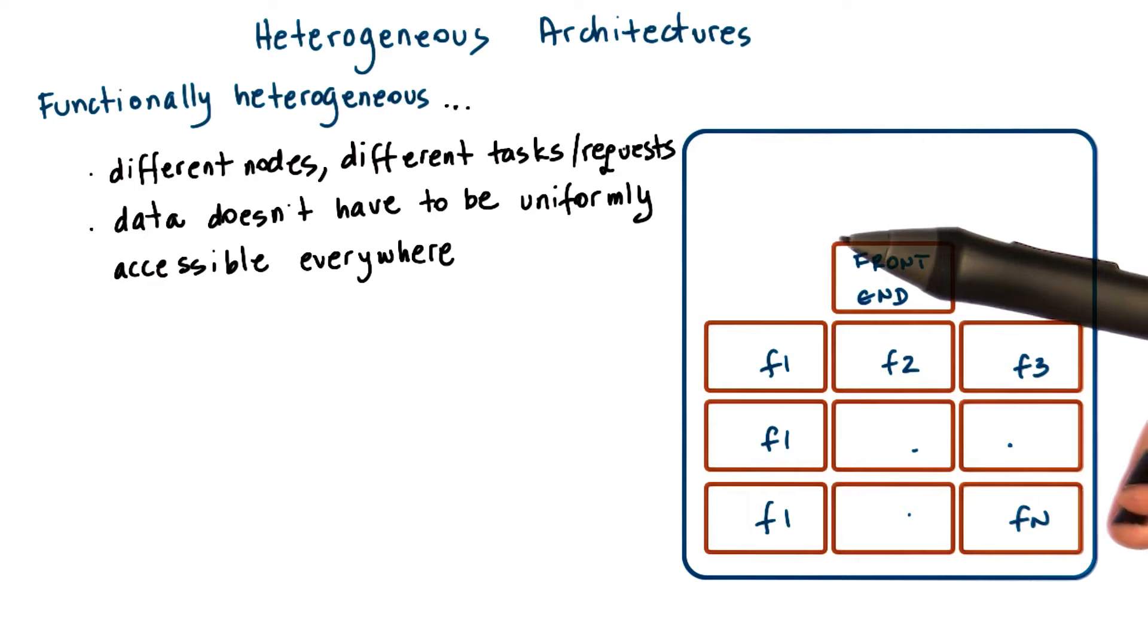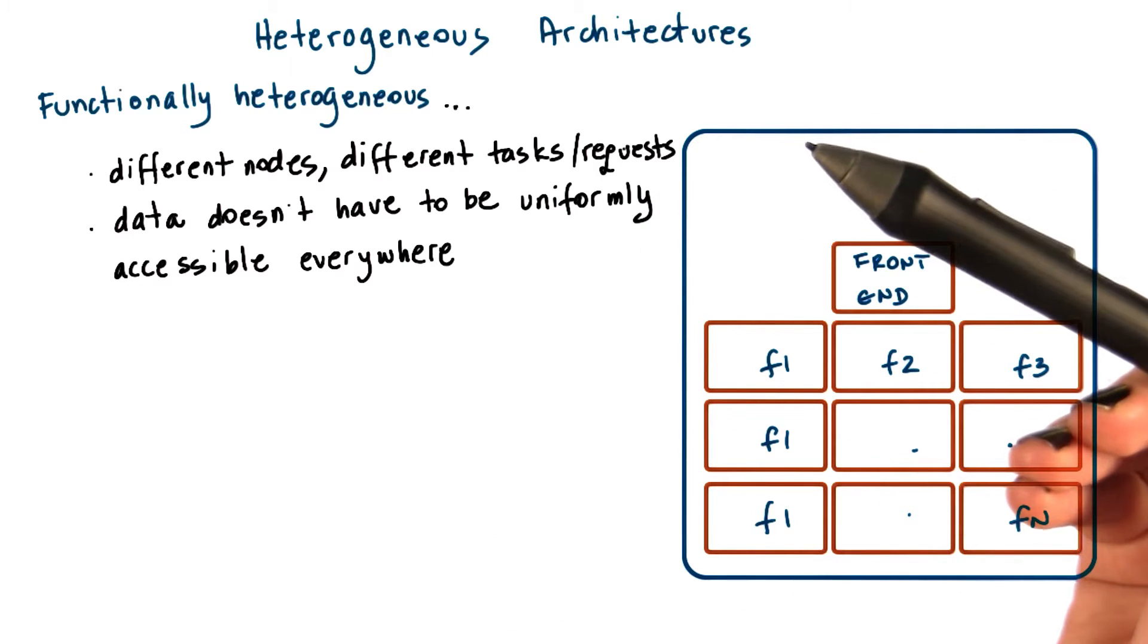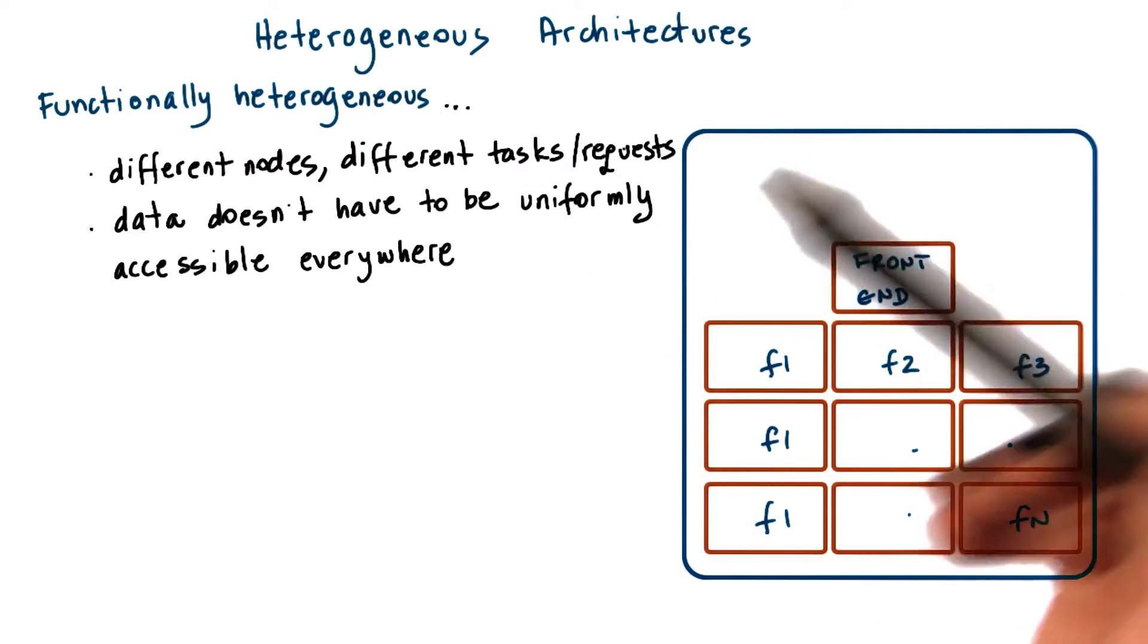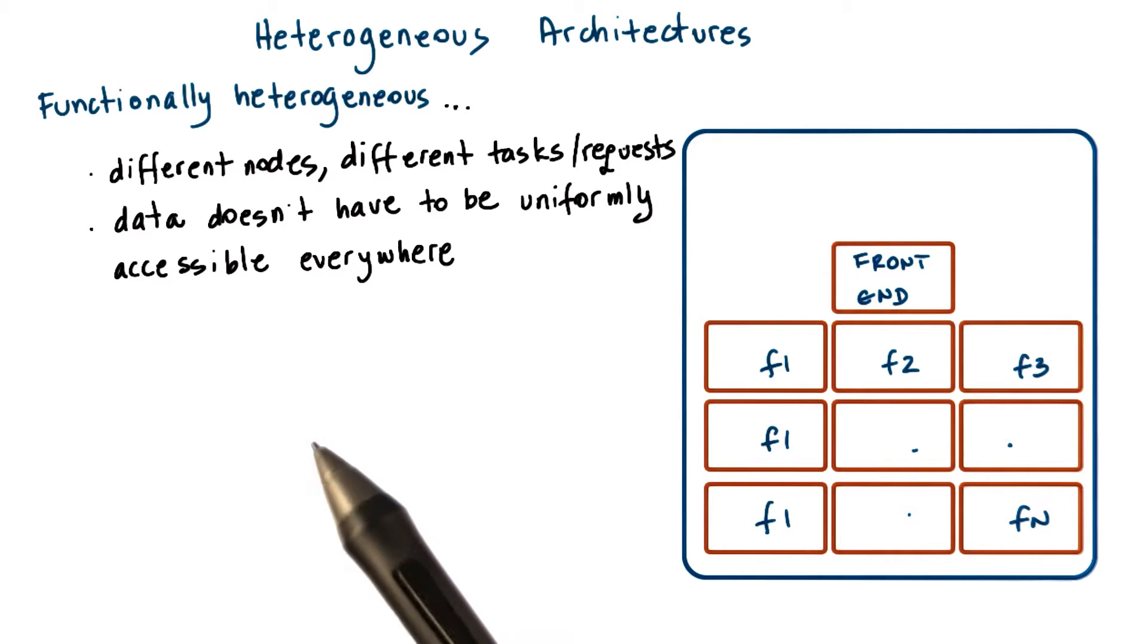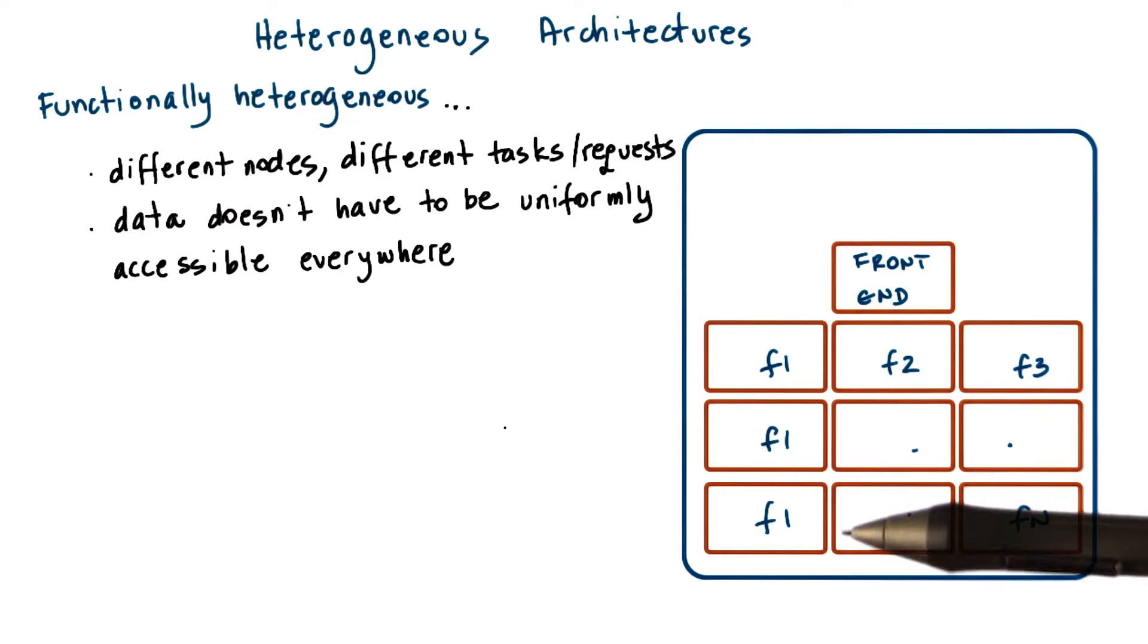For instance, requests may be divided among servers based on the request content, such as when requests are divided based on the alphabetical order of the requested file name. Or for a service such as eBay, servers may be designated to perform browsing requests versus buying or bidding requests.